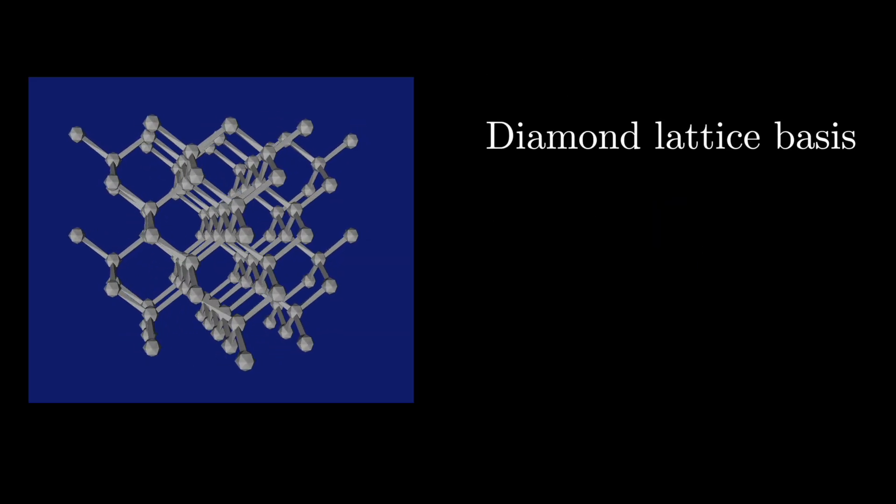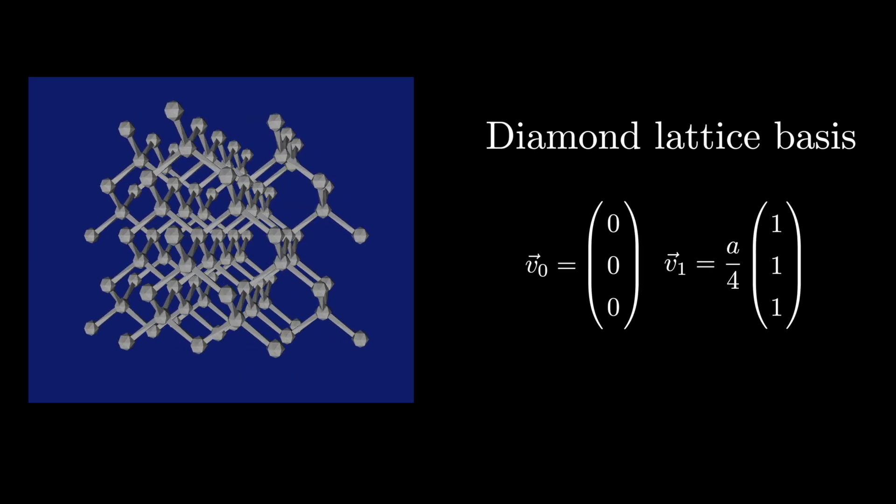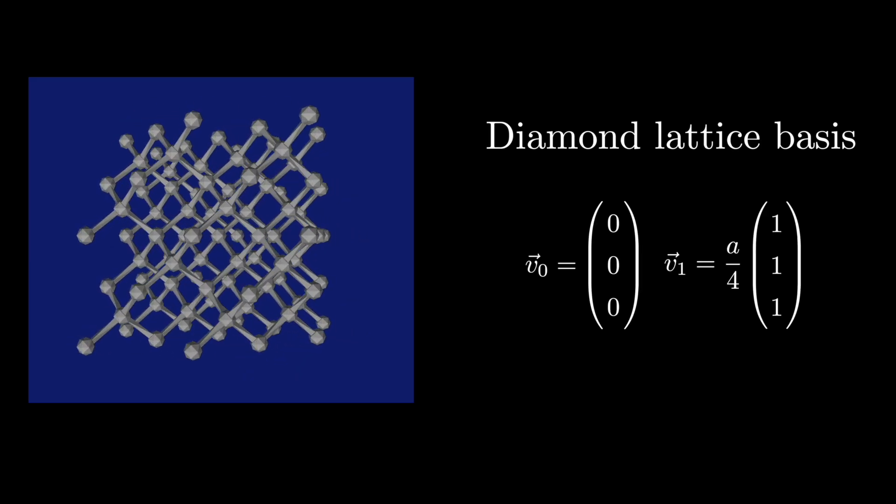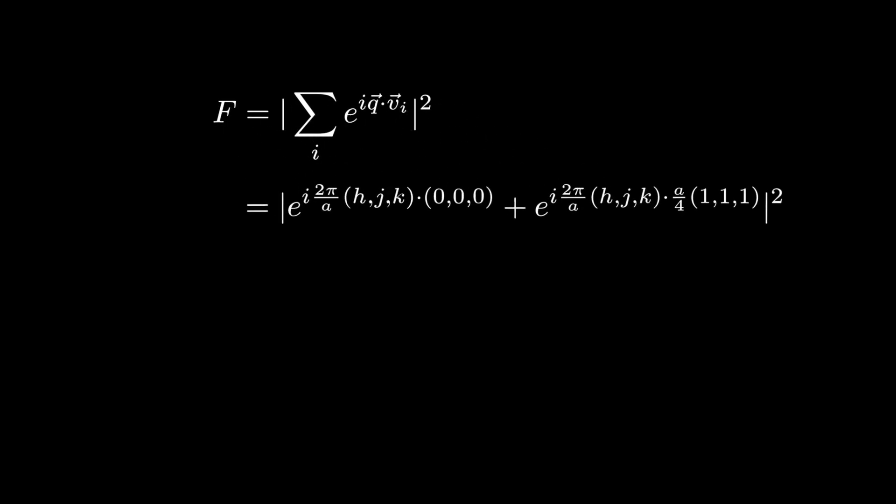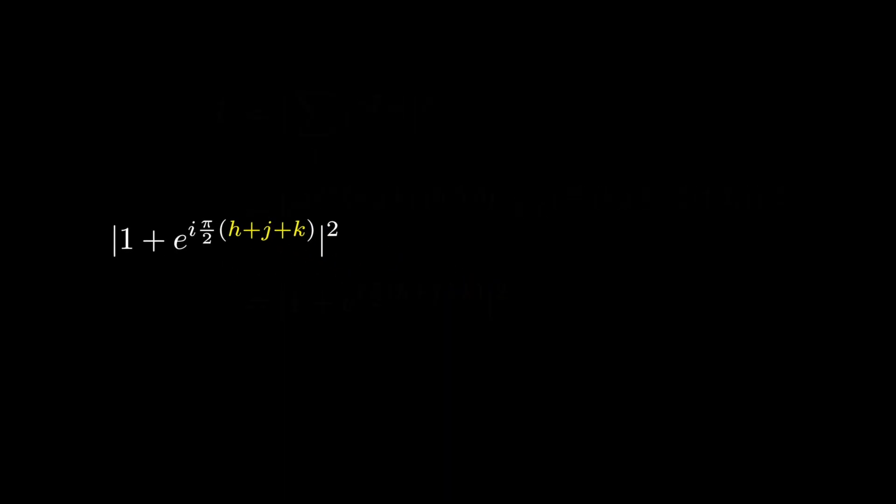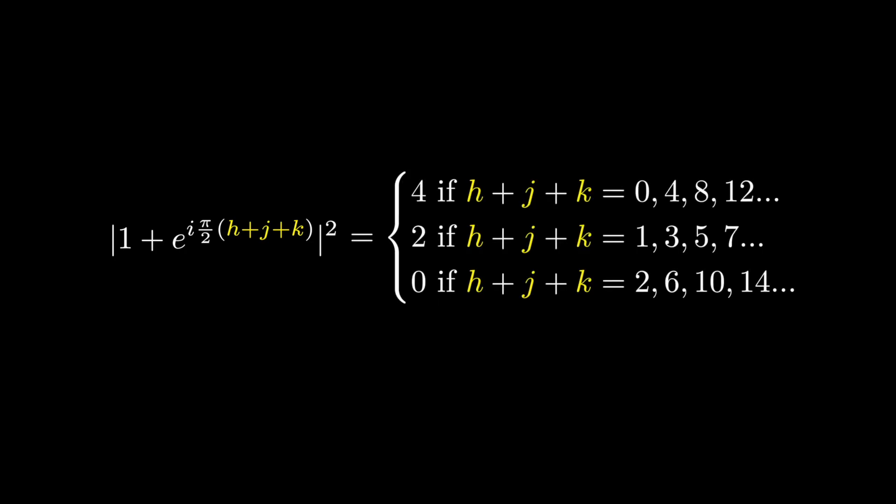For example, the v-vectors for the diamond lattice are just these two. I know they look deceptively simple but using them you can construct a diamond lattice. Using these vectors, the structure factor for the diamond lattice ends up just like this. Now we can look for the coordinates inside the crystal that produce different values and this is what we find. The structure factor will be 4 if the coordinates add up to a multiple of 4. It will be 2 if the coordinates add up to an odd number and it will be 0 if they add up to an even number that is not a multiple of 4.